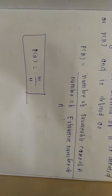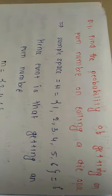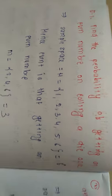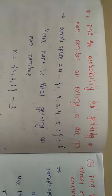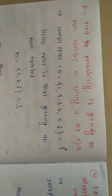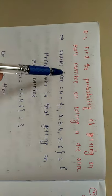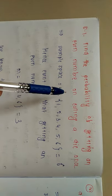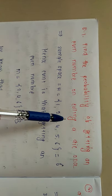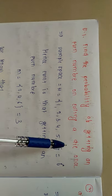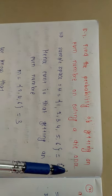Probability of any event is equal to number of favorable cases divided by sample space. Small m indicates favorable cases, capital N indicates sample space. We will see the examples — very easy examples. See here the example.